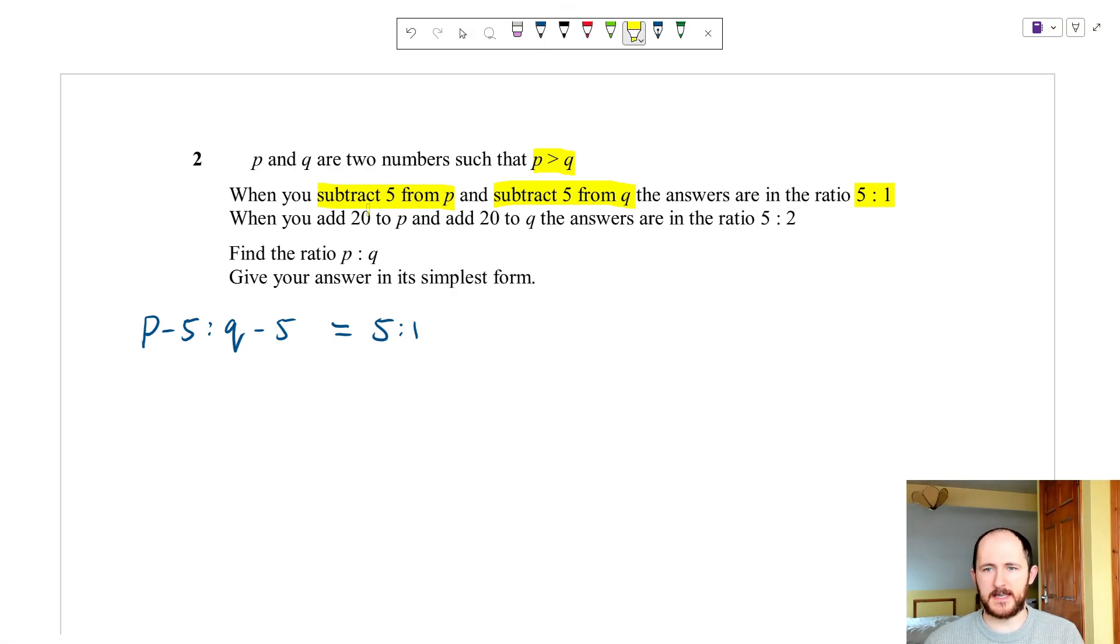The other piece of information they give us is that when you add 20 to p and add 20 to q the answer is in the ratio of 5 to 2. What I've just done is a super common thing in the higher level ratio questions where they'll expect you to translate this information into a ratio. Normally what happens is you make this into an equation and solve it. The problem is we have two unknowns, p and q, so we need two equations. So when we do p plus 20 to q plus 20 we get 5 to 2.